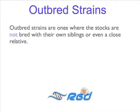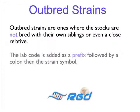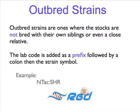Outbred strains are ones where the stocks are not bred with their own siblings or even a close relative. In this case, the ILR code is added as a prefix followed by a colon and then the strain symbol.